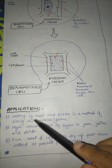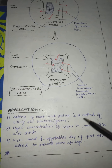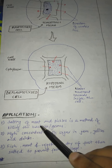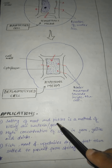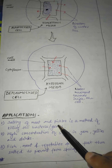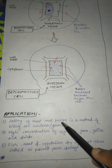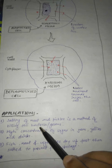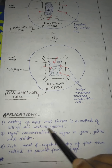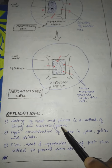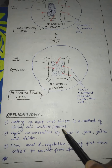Next, we will discuss the applications of plasmolysis. The first application is the salting of meat and pickles as a method of killing bacteria or germs. When we place salt into eatable materials like meat and pickles, the water molecules present inside the bacterial cells or germs are eliminated from their bodies, causing those bacteria and germs to die, making the eatable material free of bacteria and germs.